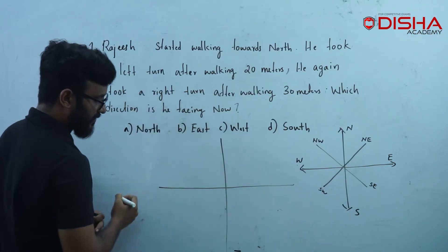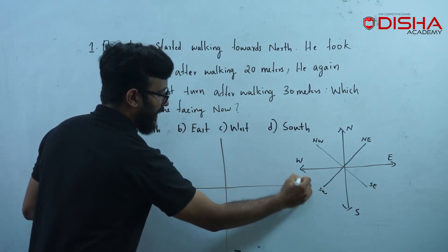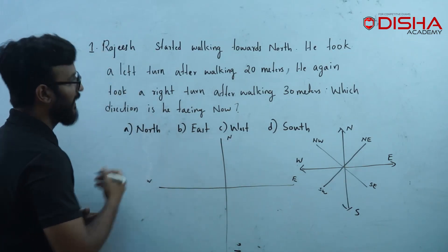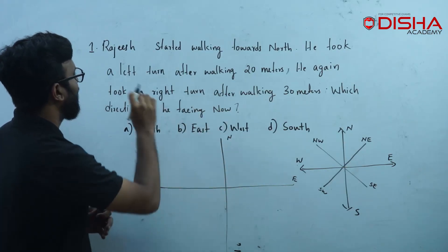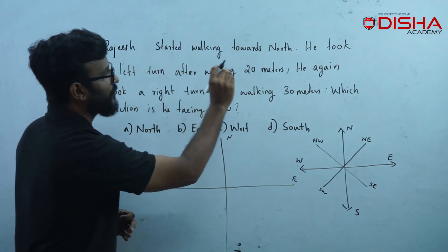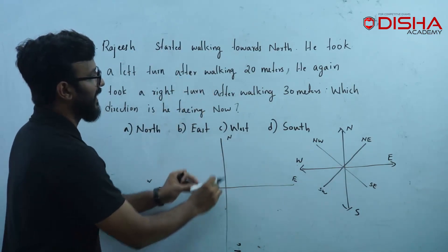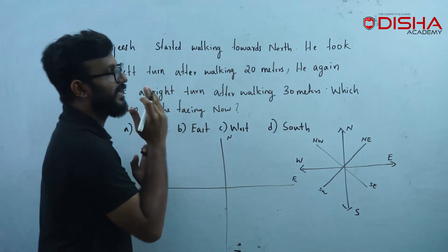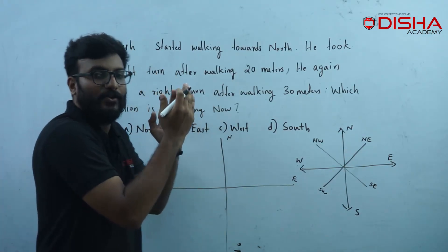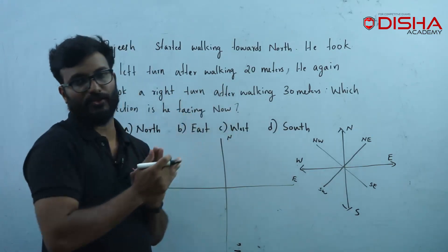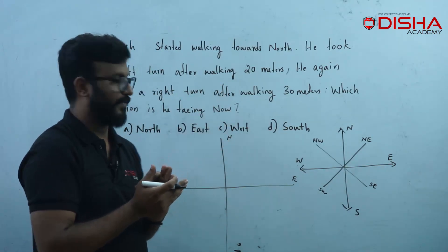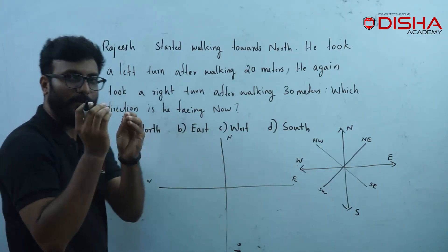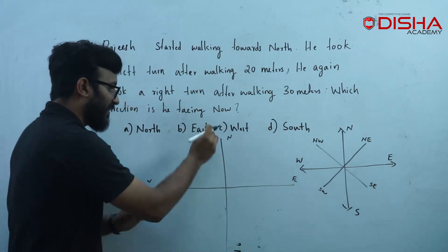What is the rough structure? You have to draw a rough structure. I will tell you about VNS — you have to know about VNS. Rajesh started walking towards North. You have to know about the direction. He took a left turn after walking 20 meters. Then we will mark this on the rough structure.